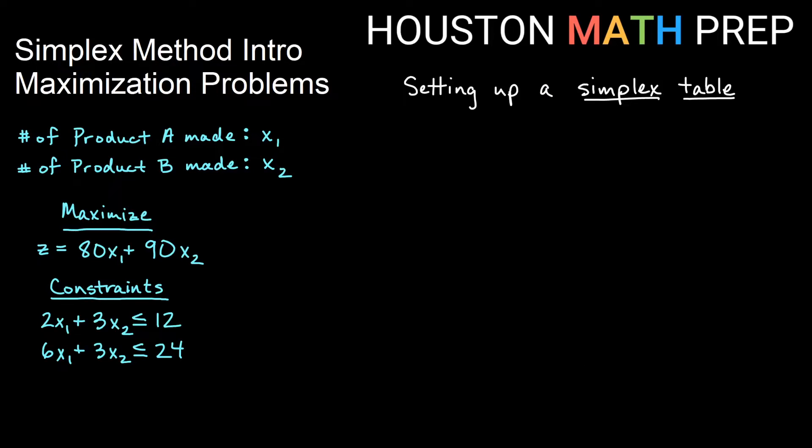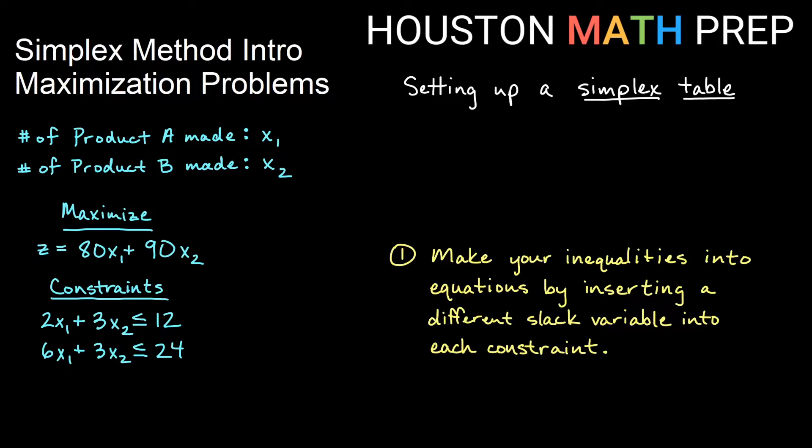So setting up the actual simplex table is the rest of what I want to do in this video. And then we'll work on the rest of the simplex method in videos following this in the sequence. So the first thing that we'll do is we need to make the inequalities, our constraints, into equations. And the way we're going to do that is to insert a slack variable into each constraint. And each slack variable we insert into each one is going to be a different one, okay? So the first one will get a slack variable, the second one will get a slack variable, but they're going to be different slack variables. We're going to turn them into equations.